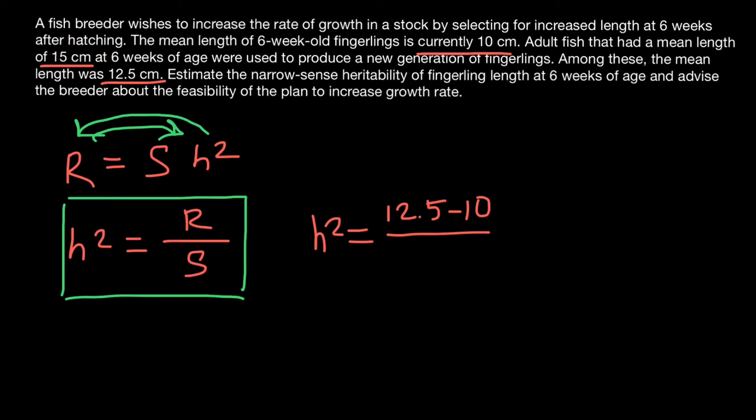This is the parental generation we chose to mate, and our base population is 10 cm. Selection differential is 15 cm minus 10 cm, which equals 5 cm. So h² equals 2.5 cm divided by 5 cm, or 0.5.